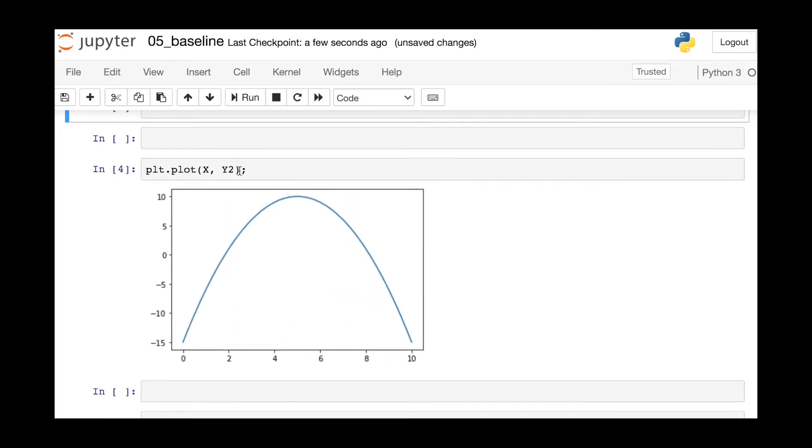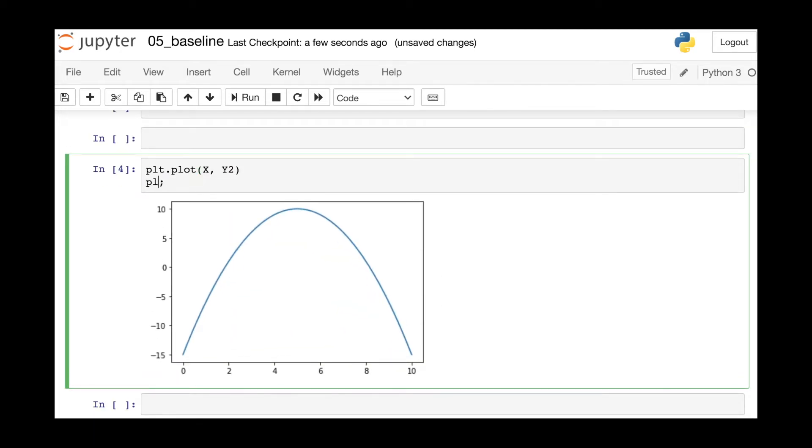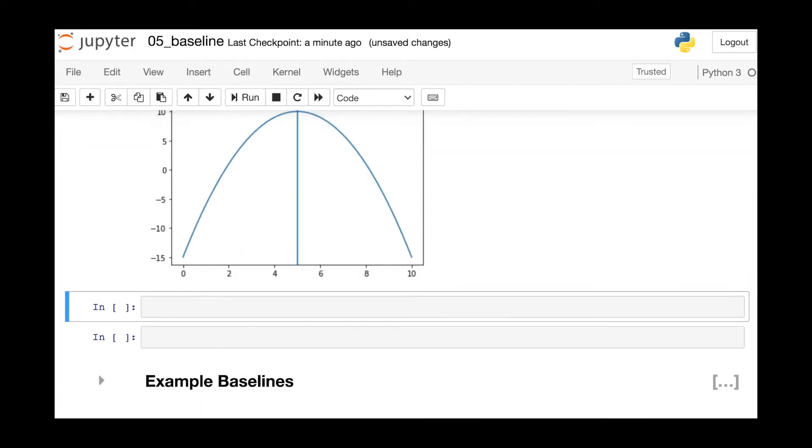So of course we can also draw vertical lines. We'll just reference the PyPlot module and then write axvline, and we'll just supply that we want a line at x equals 5.